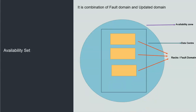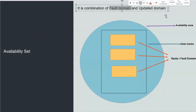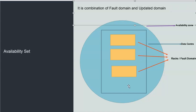If you don't want to use a different availability zone and want to stay in one availability zone only, there is another mechanism to increase the SLA. For example, West US has only one availability zone. In that case, we can use an availability set, which also improves the SLA. An availability set is a combination of fault domain and update domain.